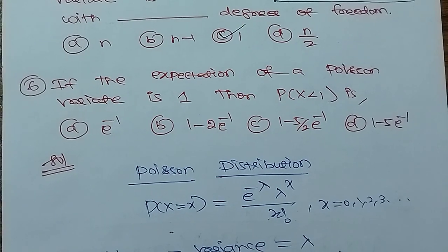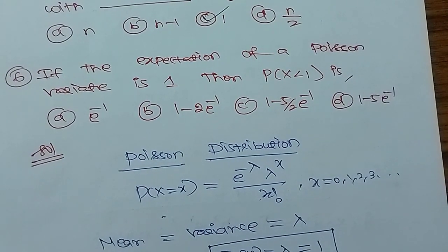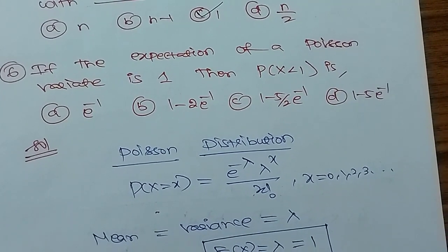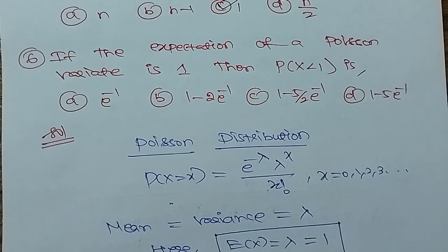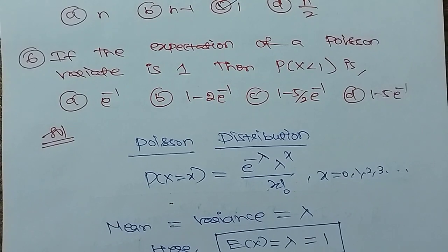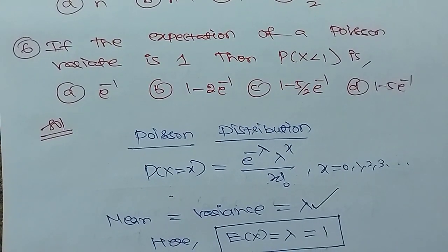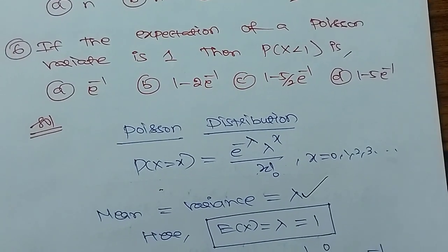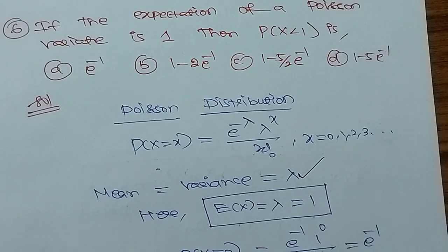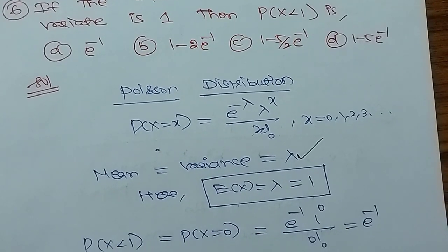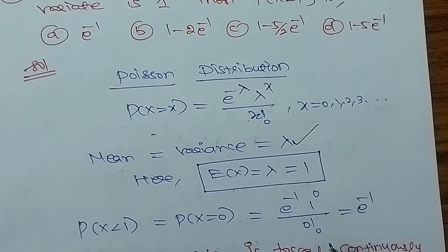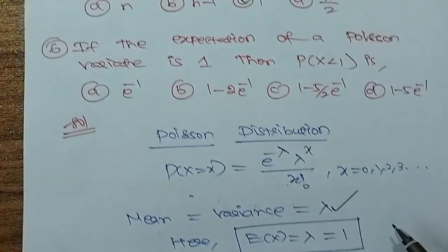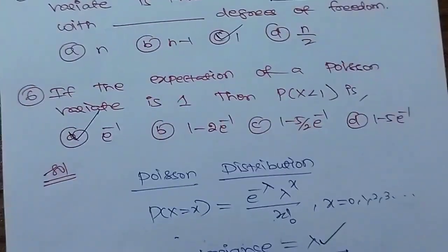For a discrete Poisson distribution, the formula is P(X=x) = e^(-λ) × λ^x / x!, for x = 0, 1, 2, 3. In Poisson distribution, mean and variance are both equal. The expectation E(X) = lambda = 1. P(X < 1) means P(X = 0) = e^(-1) × 1^0 / 0! = e^(-1). Option A is the correct answer.